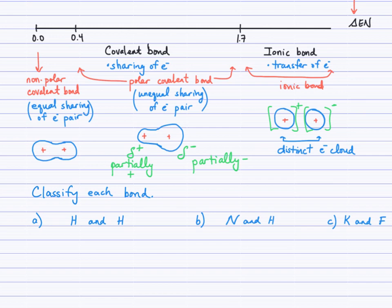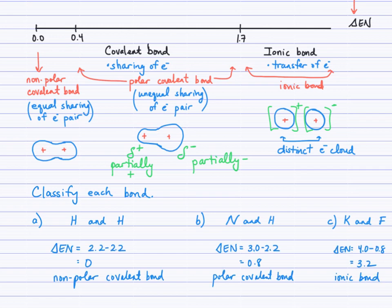Look at your test reference sheet in your notebook. You'll see that for the H–H bond, knowing that the atoms are the same element means they have the same electronegativity values, so the difference is zero. I showed the calculation here, but I wouldn't even take the time to do it. With an electronegativity difference of zero, we fall into the nonpolar covalent bond description.